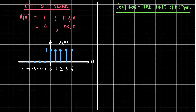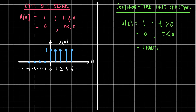Similarly, we can define the unit step signal for the continuous time case. We define u(t) as one for all values of t greater than or equal to zero, and zero for t less than zero. However, at t equals to zero it is undefined, similar to the impulse — there is a problem in defining the unit step function there.